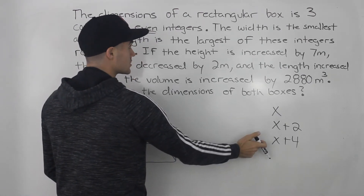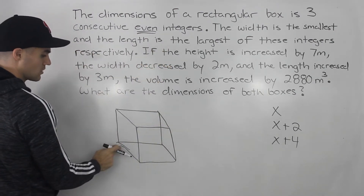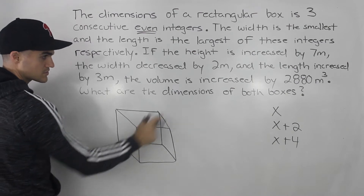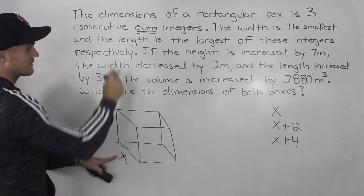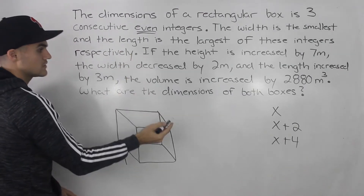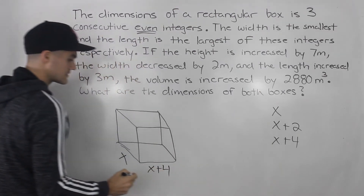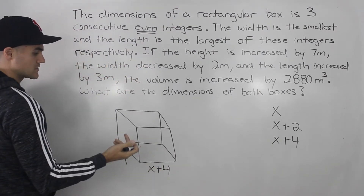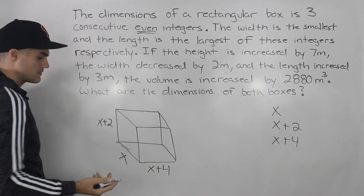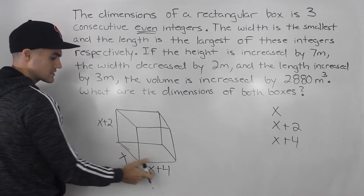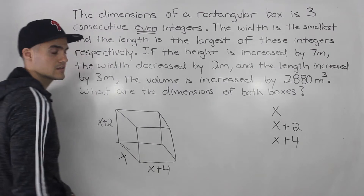So these are three consecutive even integers: x is the smallest and x plus 4 is the largest. We're told the width is the smallest, so width equals x. The length is the largest, which is x plus 4. That means the height of this box has to be x plus 2 — the integer in the middle.